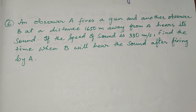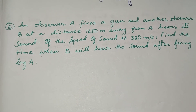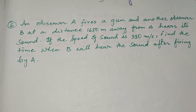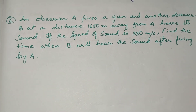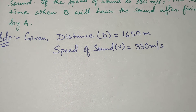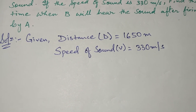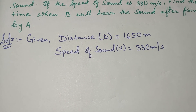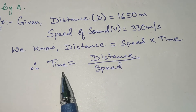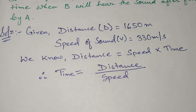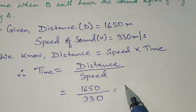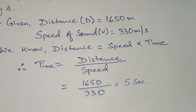The next question says observer A fires a gun and observer B, at a distance of 1650 meters, hears its sound. If the speed of sound is 330 meters per second, find the time when B will hear the sound after firing. Given: distance d = 1650 m, speed of sound v = 330 m/s. Using distance = speed × time, time = distance ÷ speed = 1650 ÷ 330 = 5 seconds.